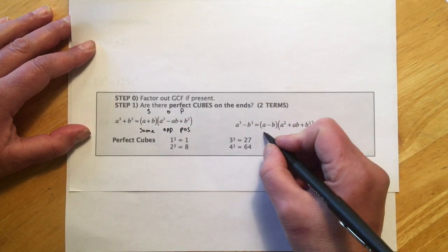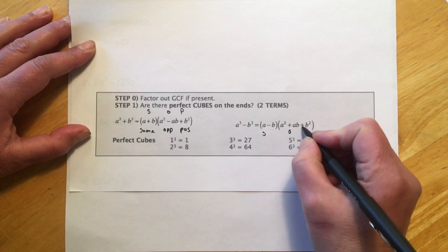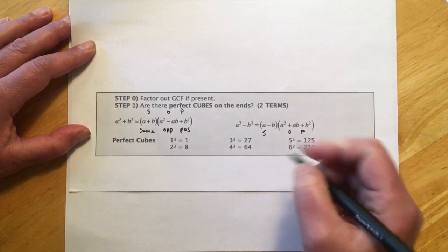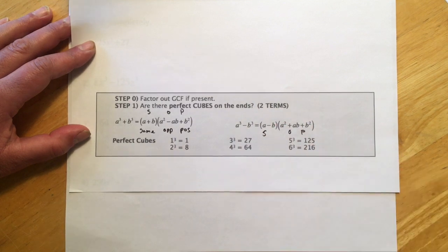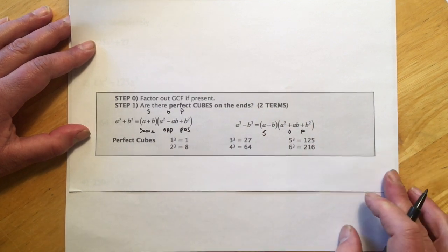So here we have a minus, so then it starts off same, and the next sign is opposite, and the last sign is positive. So that pattern is the same in both formulas, so that kind of helped me learn the sign changes on those.